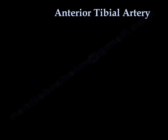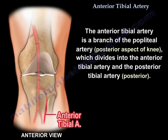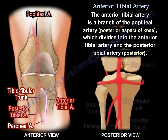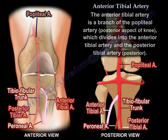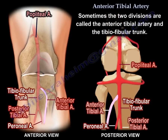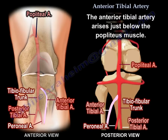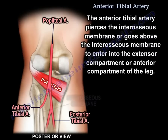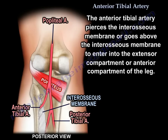The anterior tibial artery is a branch of the popliteal artery, which divides into the anterior tibial artery and the posterior tibial artery. Sometimes the two divisions are the anterior tibial artery and the tibiofibular trunk. The anterior tibial artery arises just below the popliteus muscle and pierces the interosseous membrane — or goes above it — to enter into the extensor compartment, or anterior compartment, of the leg.